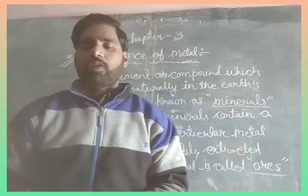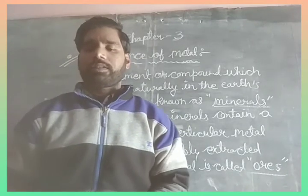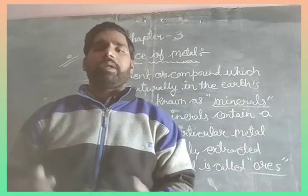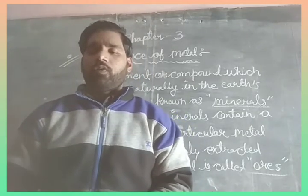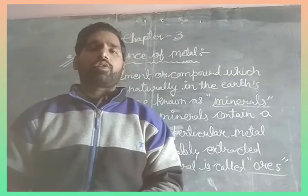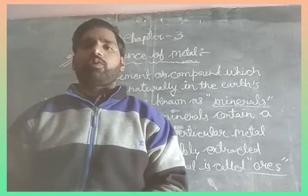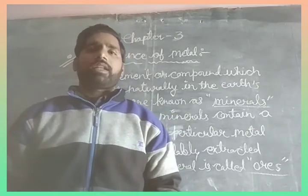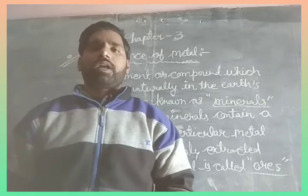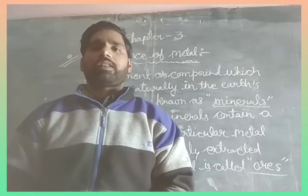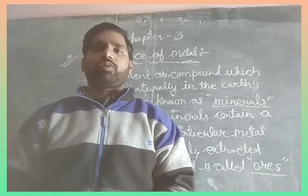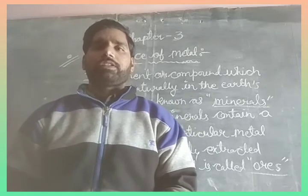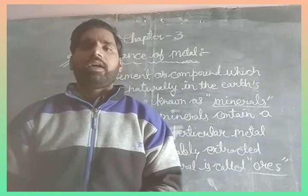We know that the Earth's crust is the major source of metals. Sea water also contains some soluble salts, such as sodium chloride, magnesium chloride, and calcium chloride. It is important to remember that the Earth's crust is the major source of metals, and various types of salts are also present in sea water.